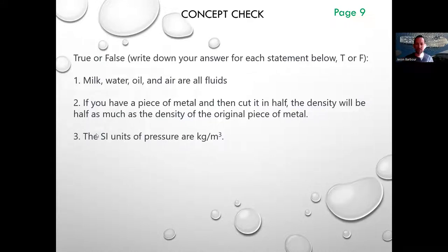Number three, SI units of pressure are kilograms per cubic meter. That is false. SI unit pressure is the Newton per square meter, which is also called a Pascal. Kilogram per cubic meter is the SI unit of density.